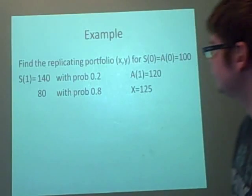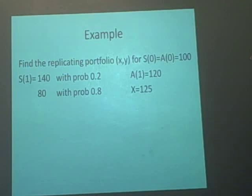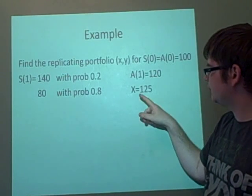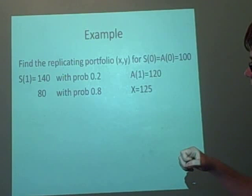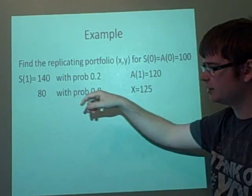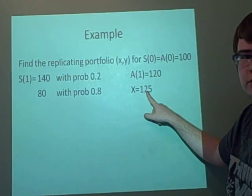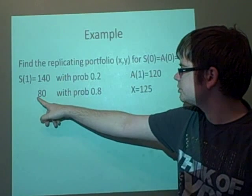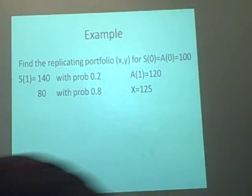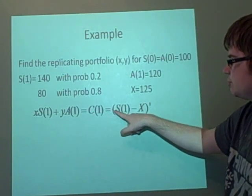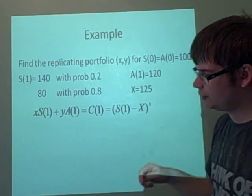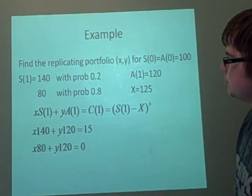We want to find the replicating portfolio (x,y) for the stock and the bond equal to 100 at the beginning. And you've been given a strike price here of 125. We're going to say this is a European call option. So we're told we can buy at time one for 125. So it goes up to 140 with probability 0.2, down to 80 with probability 0.8. What we want to do first, we've got that formula: xS(1) plus yA(1) equals C(1). And we just remember this C(1) is equal to this. So we can put the values in and solve it for X and Y.